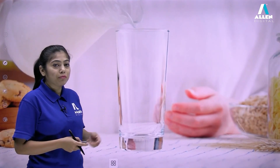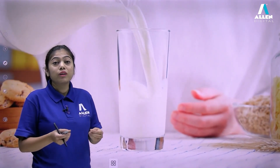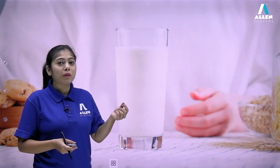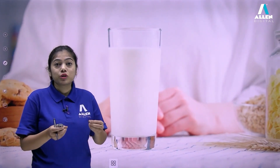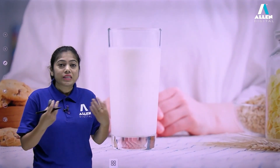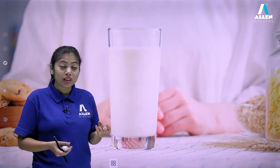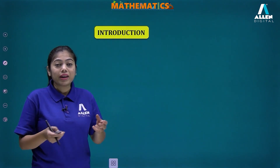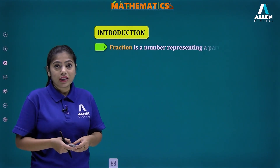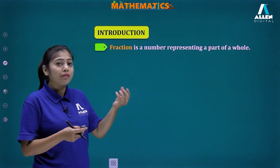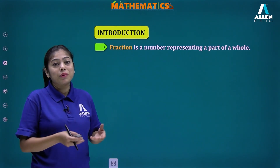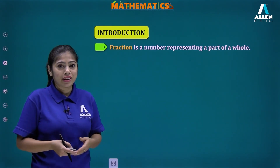Here you can see a complete glass filled with milk. We can easily find how much of the glass is filled with milk and how much is empty. So whenever we talk about parts — parts of one complete whole thing — we introduce fractions. A fraction is a part of a whole. Whenever we have a whole, some part of it can easily be represented with the help of fractions.